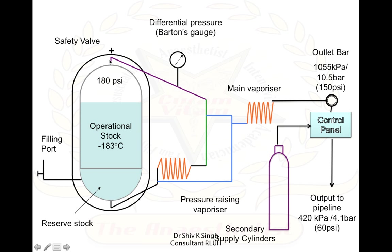When there is less demand and the temperature outside is high, you can get excess formation of gases, and in that case there is a safety valve to vent out the excess gas. To know the amount of liquid oxygen within the system, we have a differential pressure transducer also known as a Barton gauge, which measures the pressure above and below the liquid level. The gases pass into the outlets via vaporizers. When there is increased demand, there are also super vaporizers which draw in liquid from below and, using the latent heat of vaporization, add the additional amount to the pipeline.